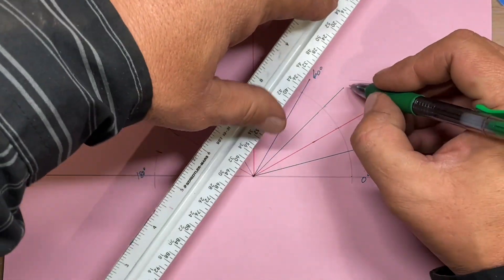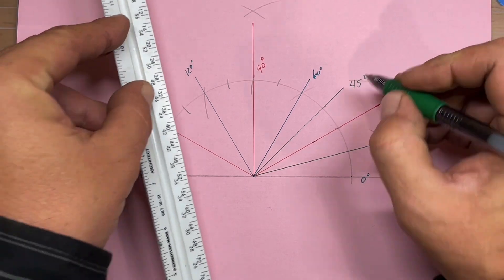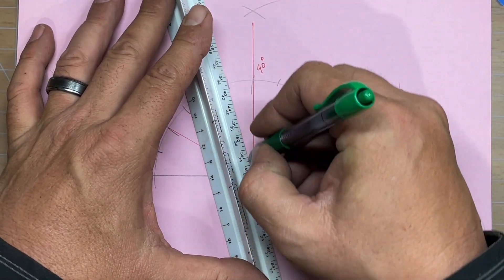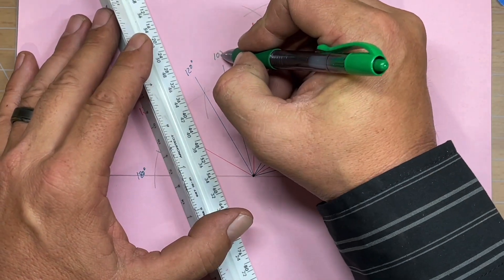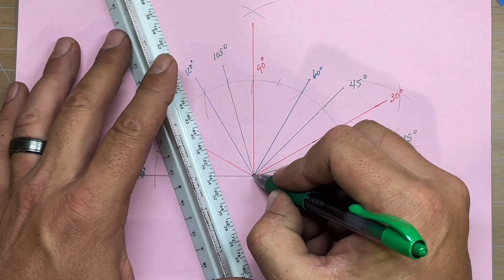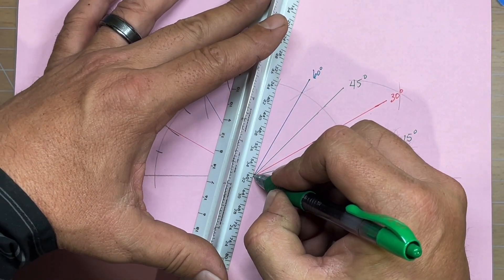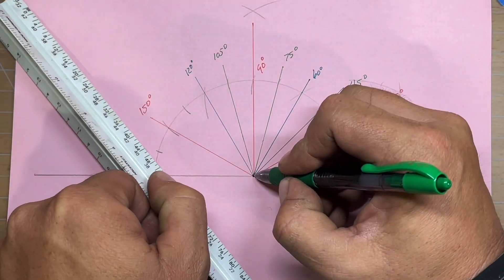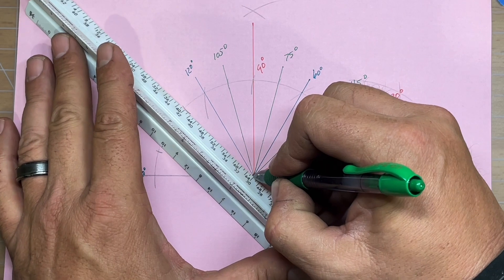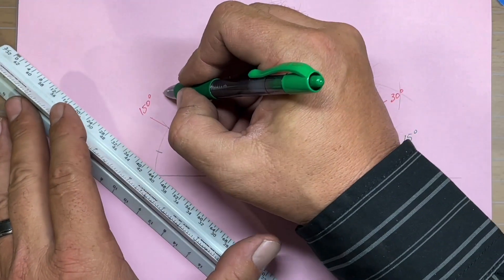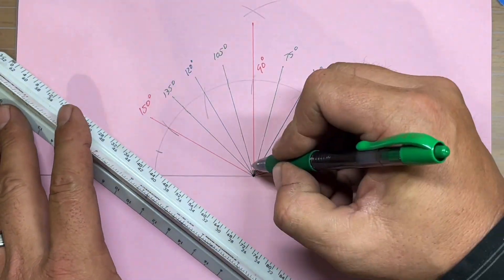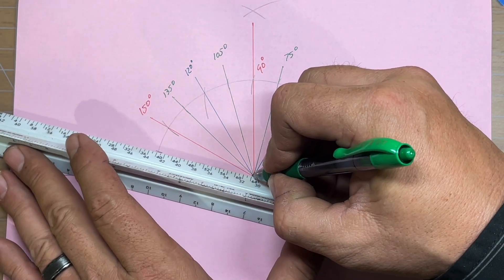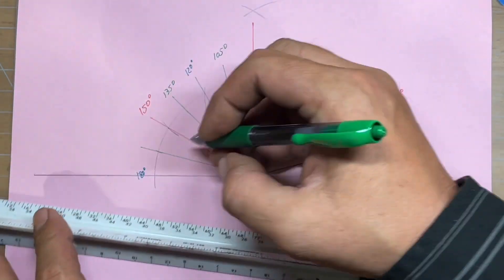So we'll draw that one, that will be 45 degrees. This one on this side is 105 degrees. This one back here will be 75 degrees. This one will be 135 degrees. And finally, our last one will be 165 degrees.